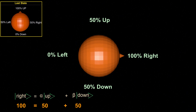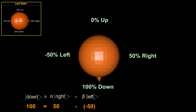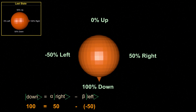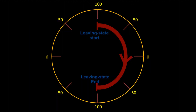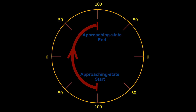What happens if we rotate it again by another 90 degrees? Spin left was at 0% and is now leaving, so 0 minus 50 returns negative 50. The spin left state has entered a negative amplitude. One might think it should be approaching and thus adding 50, but the leaving state continues until it reaches negative 100% — it only switches to approaching once it hits negative 100%. So the amplitude is correctly subtracted, giving negative 50.